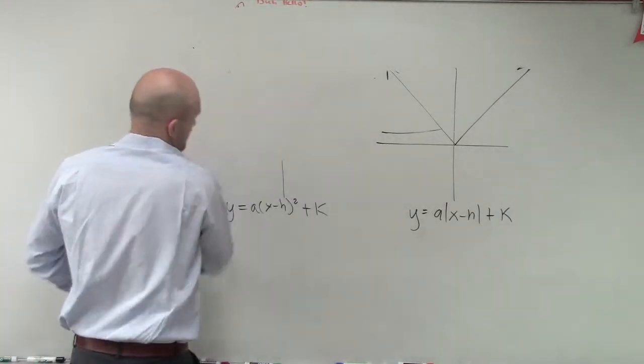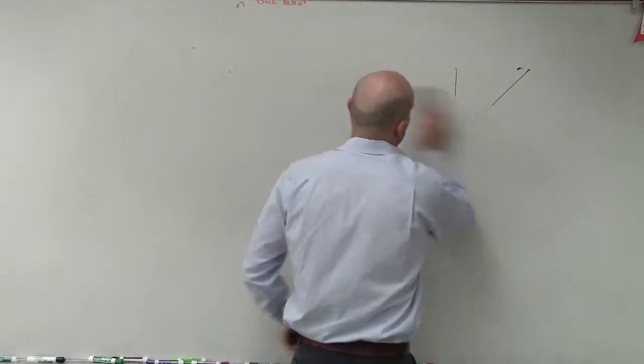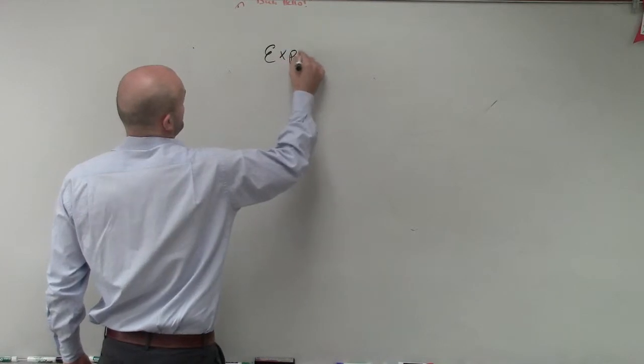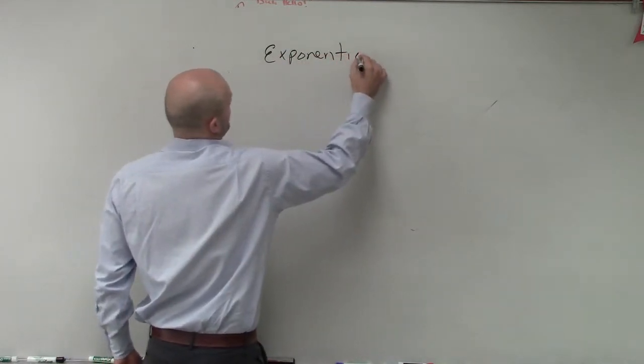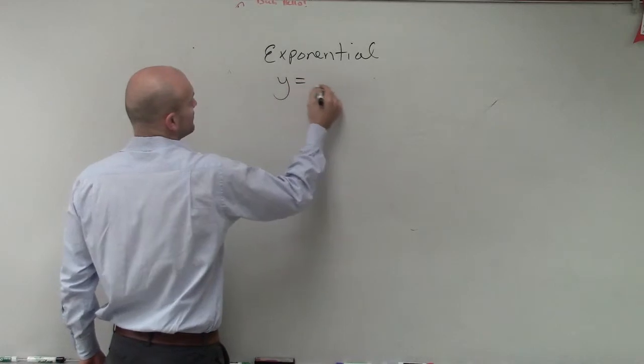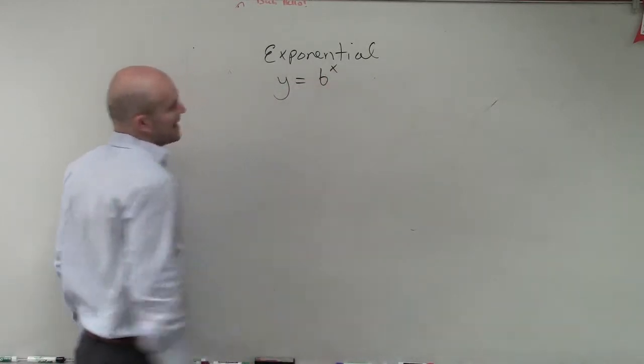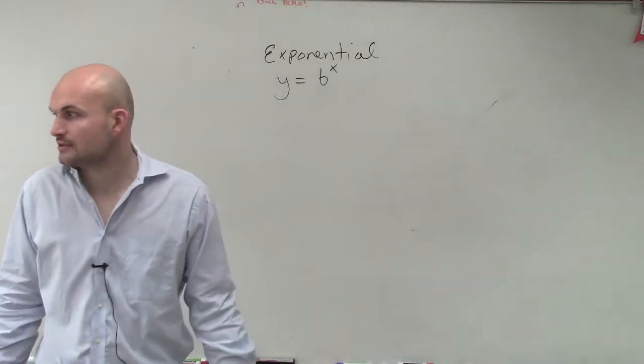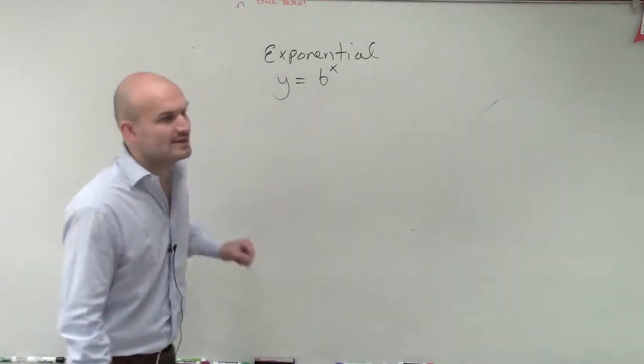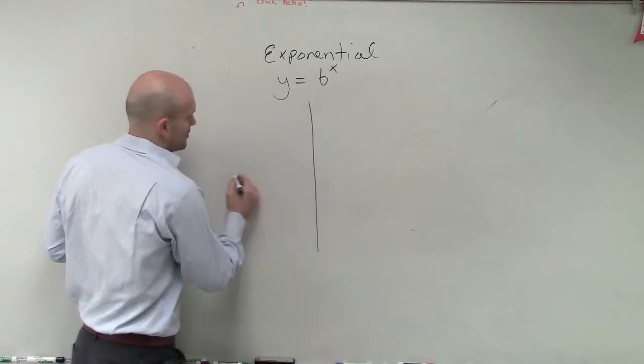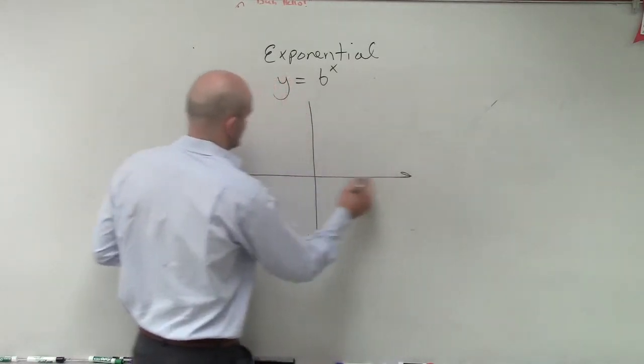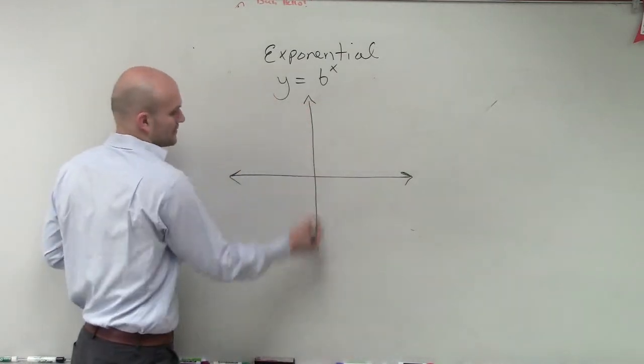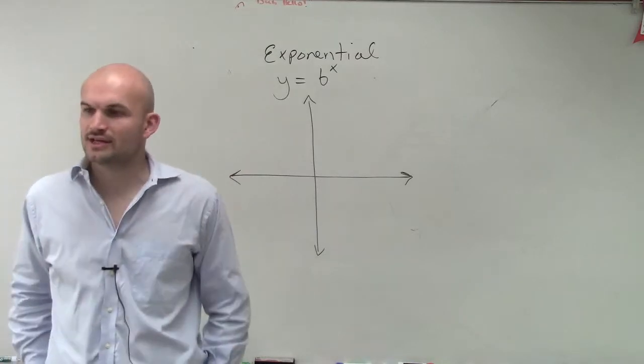So the new function looks like this. Exponential. y equals b to the x. So now your variable is up in the exponent, okay? And actually, if you want to write this in your, well, we'll get to the transformation form here in a second.